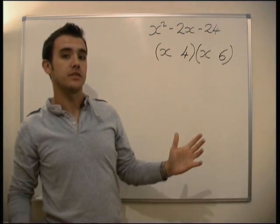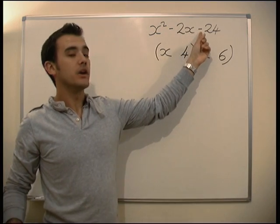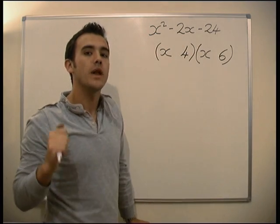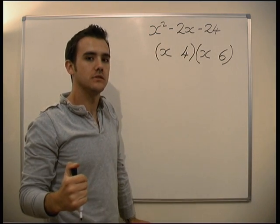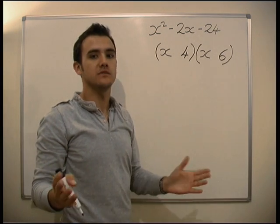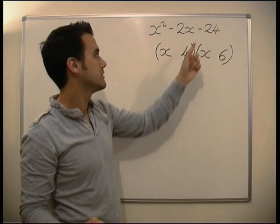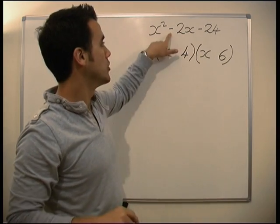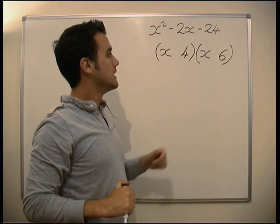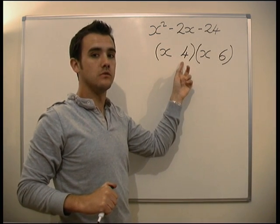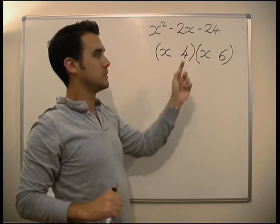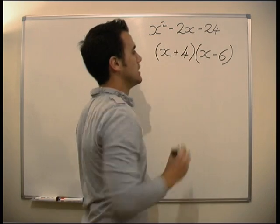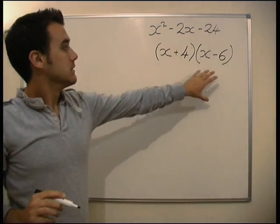Now we've got to think about the signs involved. We've got a minus here, we've got a minus here. These two numbers times together to give us minus 24 - one has to be a minus, one has to be a plus. We can't have anything else. We can't have two pluses, that would give us a plus. We can't have two minuses, that would give us a plus. So the only thing we can have here is a plus and a minus. Which one's going to be plus and which one's going to be minus? We look at the sign here - got minus 2x. So is 6 minus 4 going to give us minus 2? No it's not. 4 minus 6 is, so we put it's a minus here and a plus here.